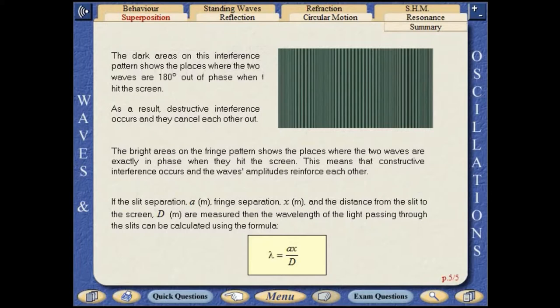If the slit separation, fringe separation, and the distance from the slit to the screen are measured, then the wavelength of the light passing through the slits can be calculated using this formula.